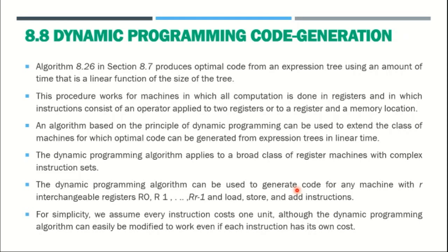The dynamic programming algorithm can be used to generate target code for any instruction or any machine, with the help of registers numbered R0 to R-1. These registers can perform load operations, store operations, and add instructions. For simplicity, we assume every instruction has a cost of 1 unit, although the dynamic programming algorithm can also be modified to handle varying instruction costs.